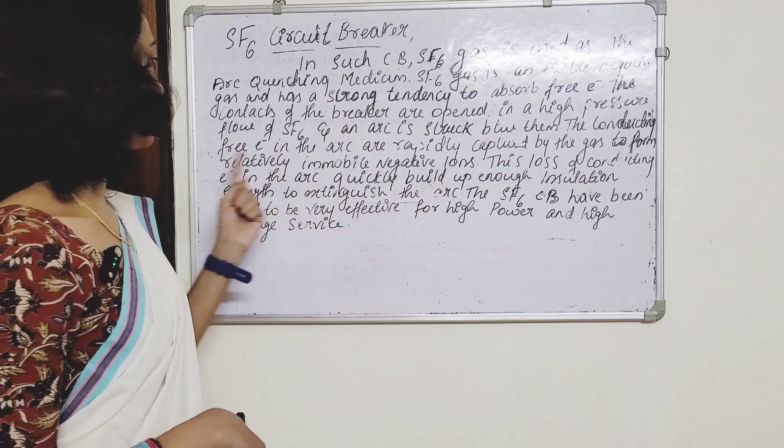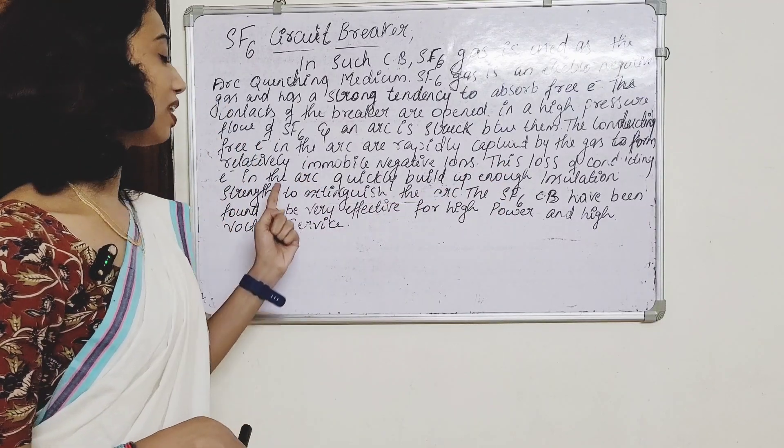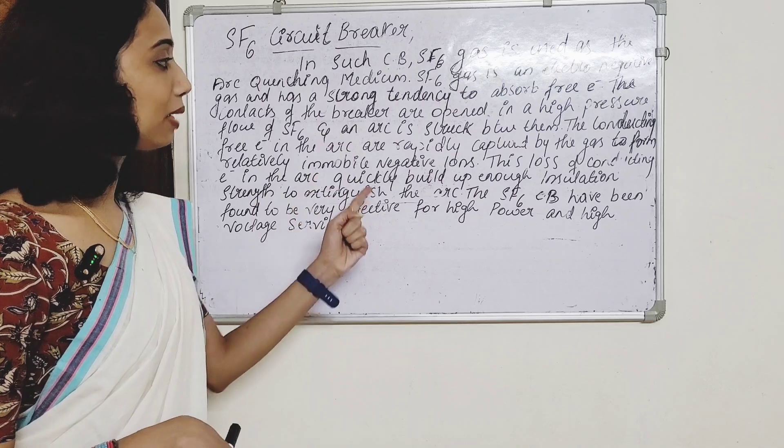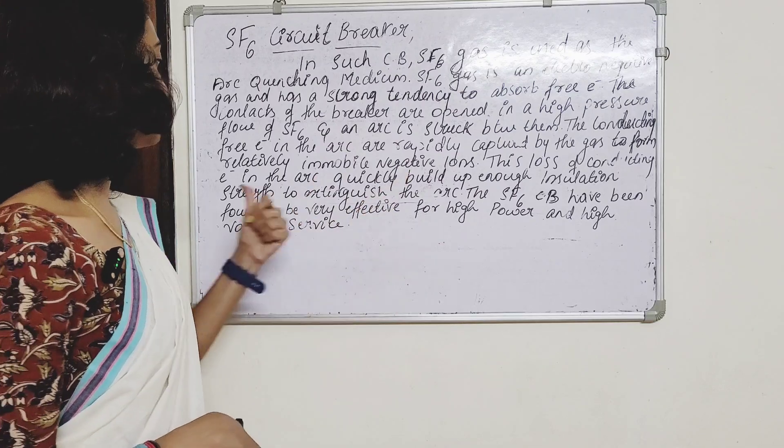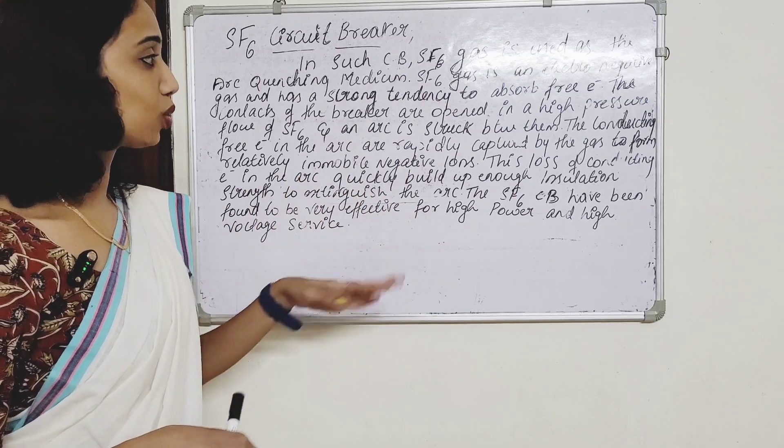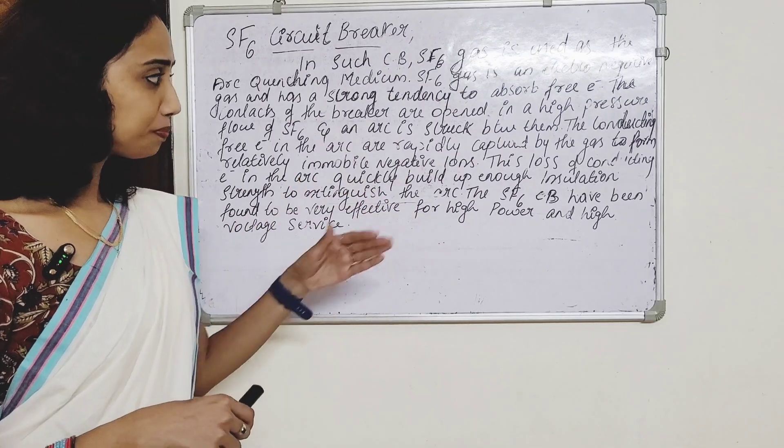This loss of conducting electrons in the arc causes the insulation strength to quickly build up, which extinguishes the arc.